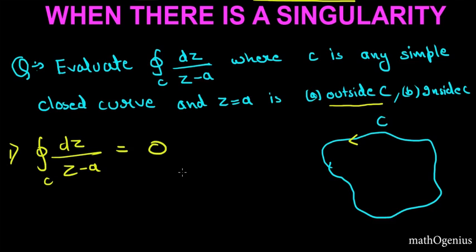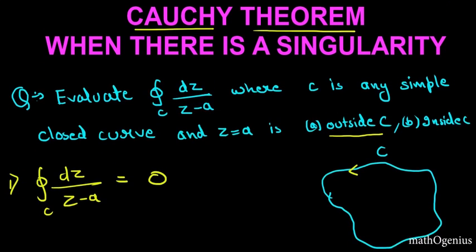the answer is zero. Right? This is analytic inside this closed curve C, so it's zero according to the Cauchy integral theorem. That's simple. That's why this Cauchy integral theorem is very important. Now what happens when z equal to a is inside this curve?